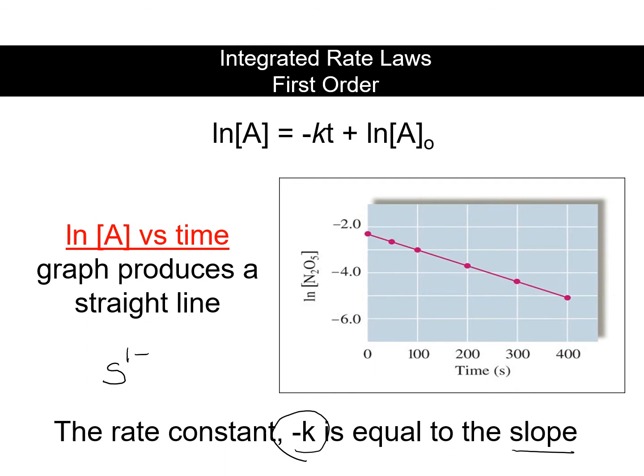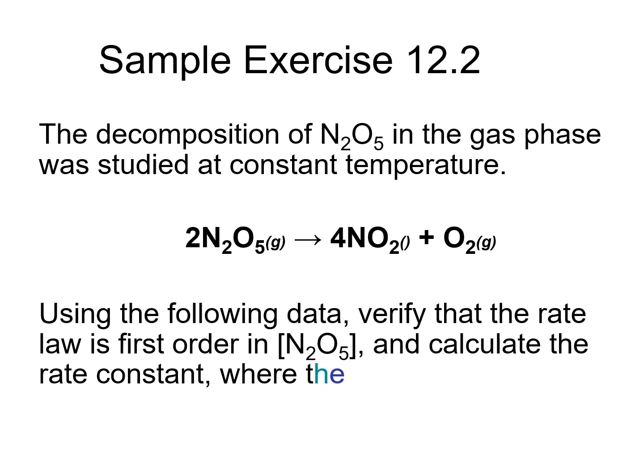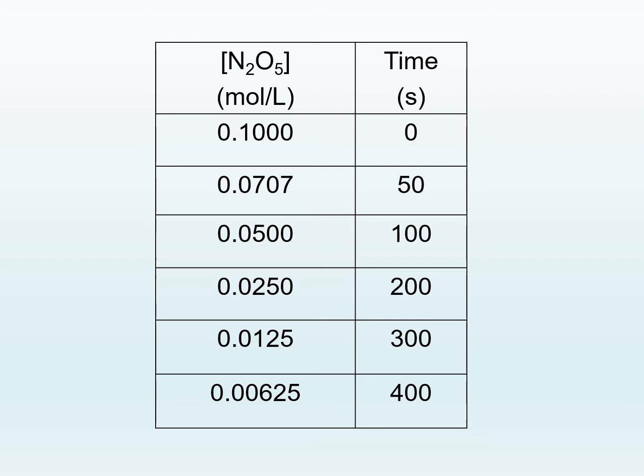Often you're given data to determine the order of a reaction. We have the decomposition of dinitrogen pentoxide studied at a constant temperature, and we're asked to verify that the rate law is first-order and calculate the rate constant. Usually you're given some data with time versus your concentration.